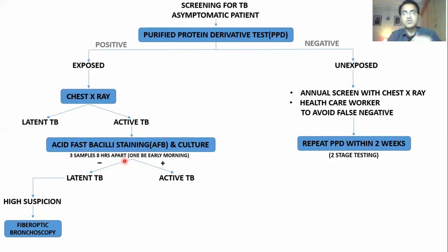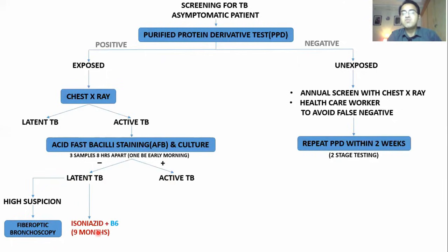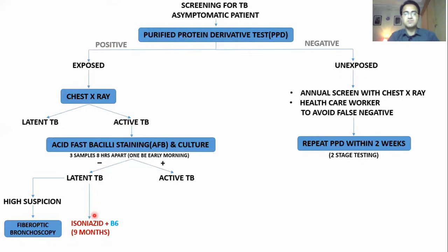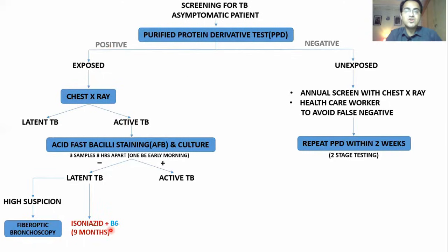If the patient has latent TB, since it can convert into active TB, you put the patient on isoniazid for nine months to kill all residual Mycobacterium. You give isoniazid with vitamin B6, because isoniazid causes excretion of vitamin B6, and that loss causes peripheral neuropathy. So you always give B6 with isoniazid.